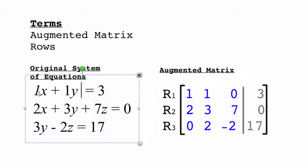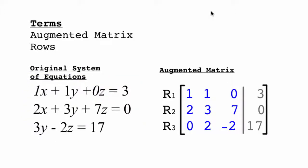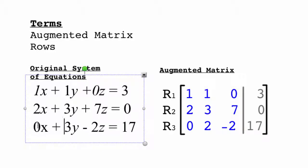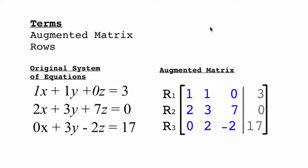And you might be wondering where the 0 comes from in that first row. If there's not a variable, you can assume that would be a 0 variable. So you can just put in 0z plus 3. The second row is pretty self-explanatory. And the third row doesn't have any variable x, so again, you can go 0x plus 3y minus 2z equals 17.